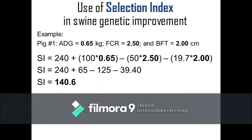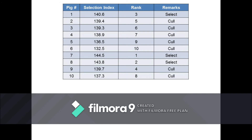The selection index score of other animals will be calculated in the same way using their respective ADG, FCR, and BFT. Suppose that we calculated the selection index scores for 10 animals. The next step is to rank them according to their selection index scores. In this example, if we are to select only 30% of the animals, only the top 3 animals having the 3 highest scores — namely pig number 7, pig number 8, and pig number 1 — will be selected while the rest will be removed from the breeding program.